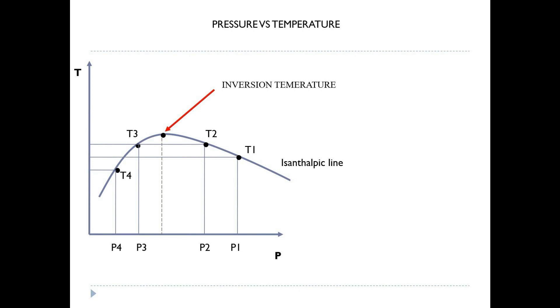The tangent at any point on the curve is given by mu equals (∂P/∂T)H. This is known as Joule-Thompson coefficient. As you can see here, the left-hand side of the inversion temperature has a positive slope. Hence, if mu is positive, then the fluid cools.